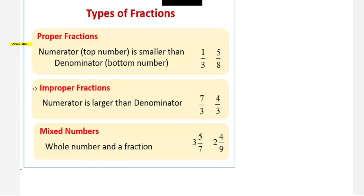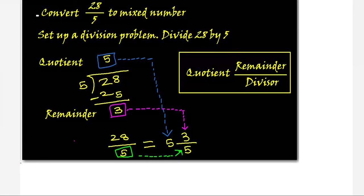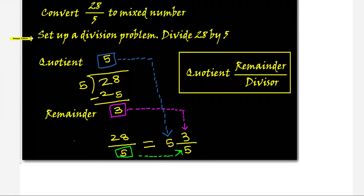In our last video we learned how to convert a mixed number to an improper fraction. In this video you are going to learn the other conversion: improper to mixed number. Let's move on and work on 28 over 5. Whenever you want to convert improper to mixed number, set up a division problem.